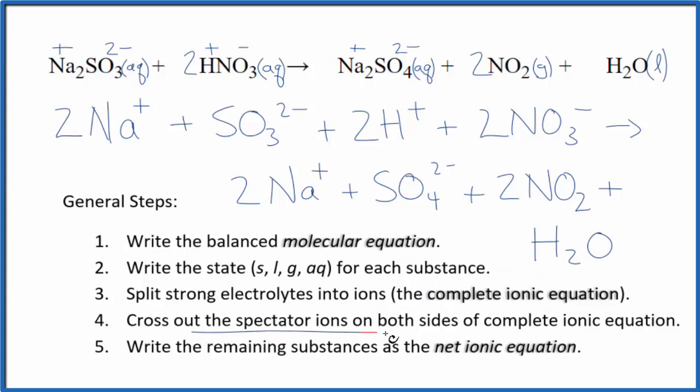Now we can cross out the spectator ions that are on both sides. In the reactants, I see two sodium ions, and in the products, two sodium ions. I'll cross those out. Everything else is unique, so this is the net ionic equation for Na2SO3 plus HNO3. Let me clean it up and write the states for our final net ionic equation.